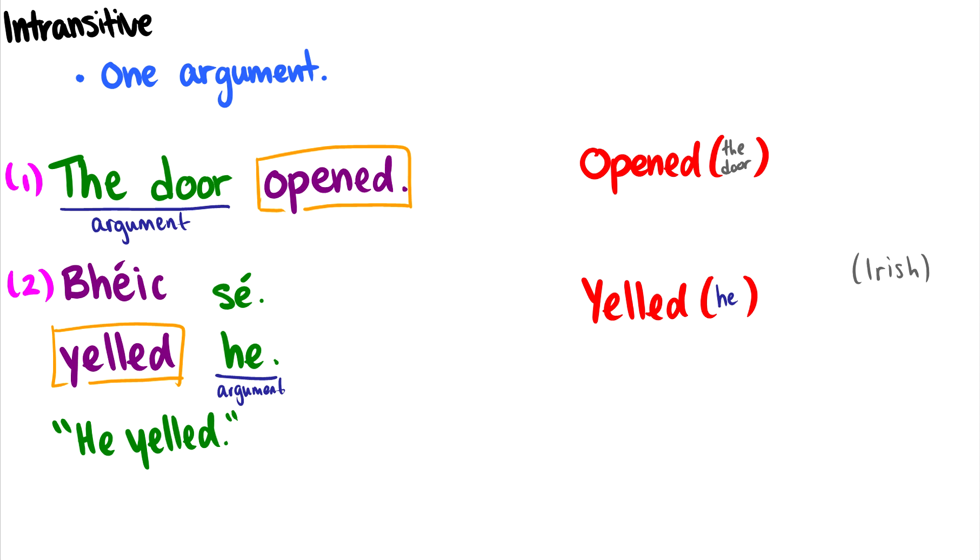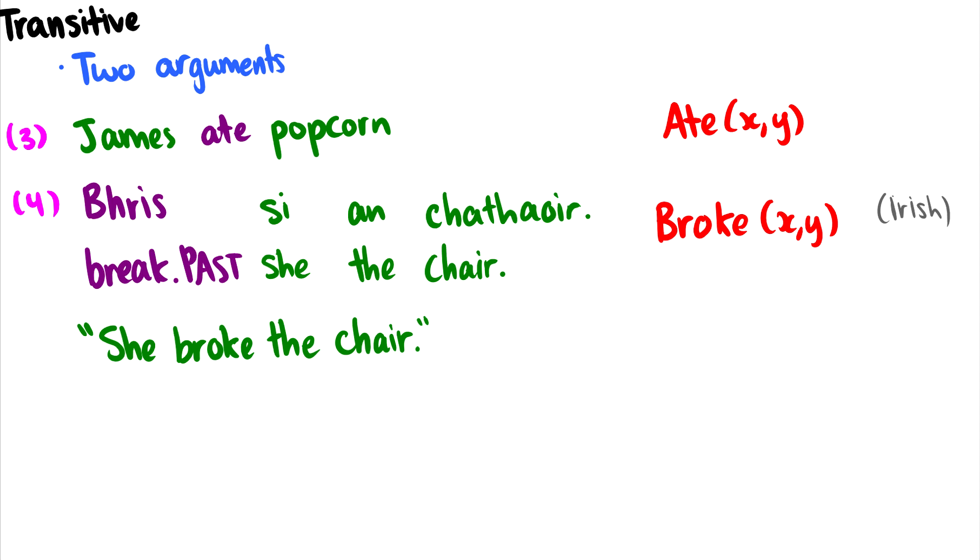These intransitive verbs just take one argument. What are some other words? He ran, or he jumped, or he sang. In these sentences all of these verbs are intransitive. Now you might say, wait, what if we say 'he sang a song'? Well in that case then we'd be considering 'he sang a song' - that 'sang' would be transitive. And transitive verbs take two arguments. So it's important right away to note that some verbs can be transitive and intransitive. It just depends on the context they're being used.